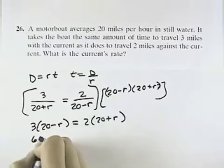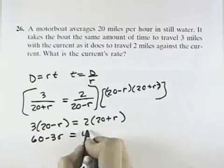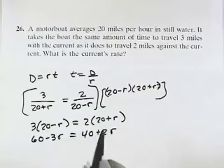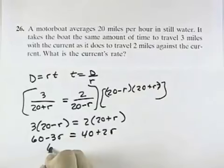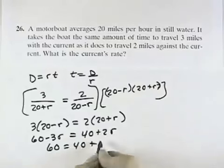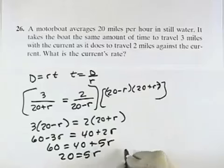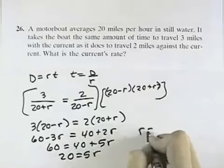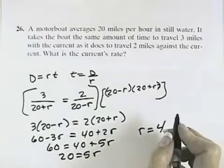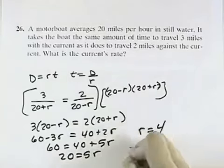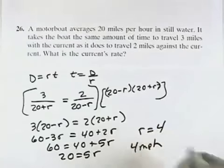3 times 20 is 60 minus 3R. Here we have 40 plus 2R. Adding 3R to both sides, 60 equals 40 plus 5R. Subtracting 40, we get 20 equals 5R. Dividing both sides by 5, we have R equals 4. So the rate of the current is 4 miles per hour.